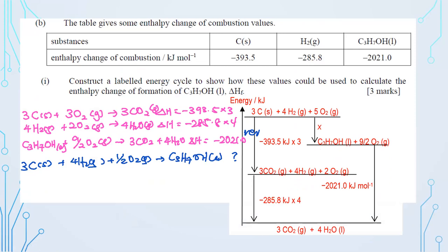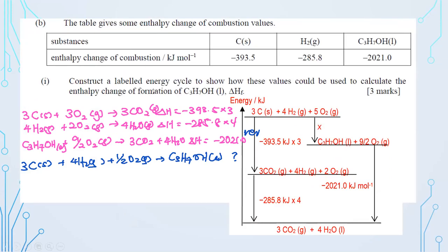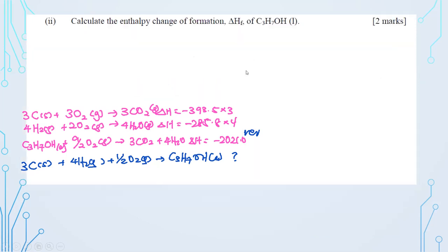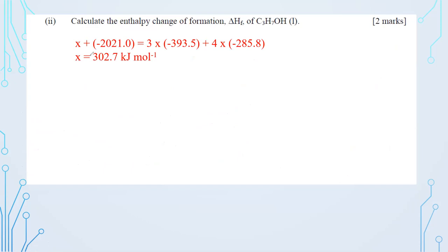After calculation, the expected answer is −302.7 kJ/mol. Note: all given values have one decimal place, so your final answer should also have one decimal place. This is how you manage significant figures — look carefully at all the values given to match the appropriate decimal places.